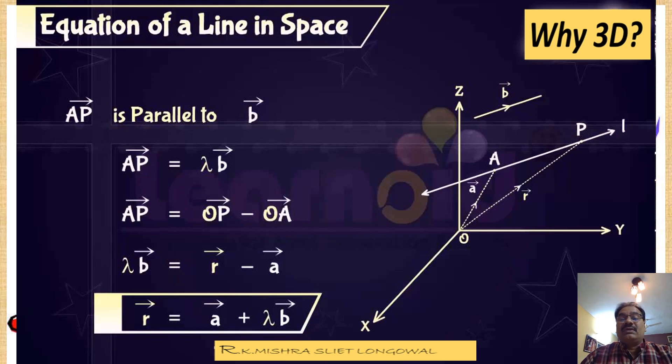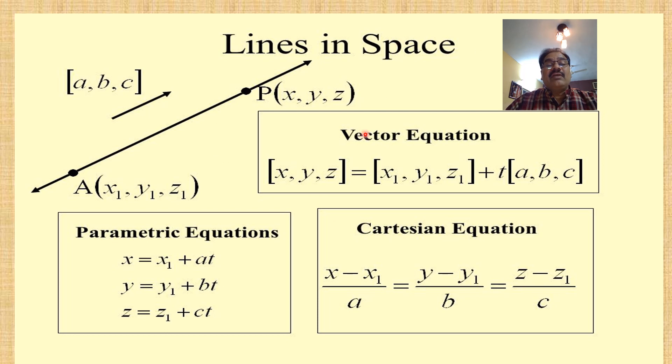For the equation of a line in space, you can see all three forms. The line in space has point A at (x₁, y₁, z₁) and point P at (x, y, z).